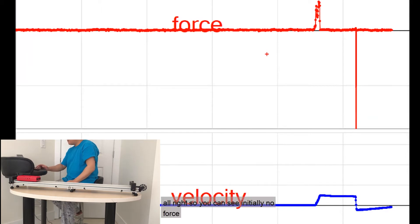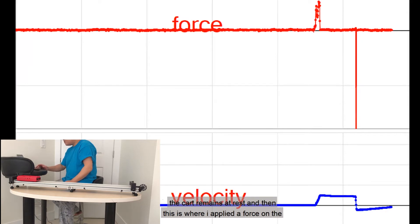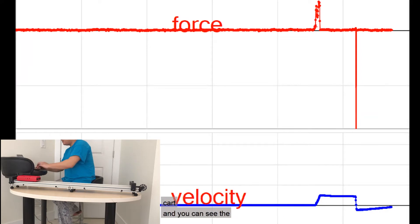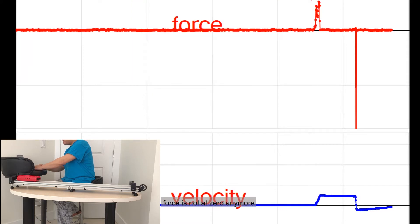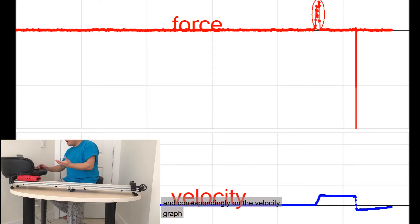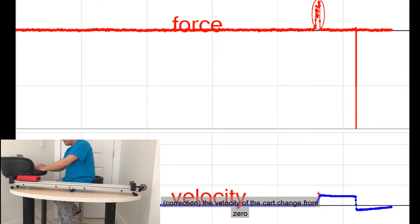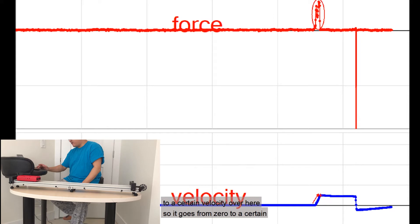So you can see initially no force, the cart remains at rest. And then this is where I applied a force on the card. And you can see the force is not zero anymore. And correspondingly on the velocity graph, you can see the velocity of the cart change from zero to a certain velocity over here. So it goes from zero to a certain velocity.